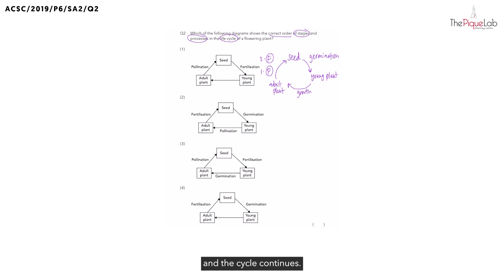And the cycle continues. Let's go through the options to find which diagram shows the correct order in the life cycle of a flowering plant. We begin with option 1.